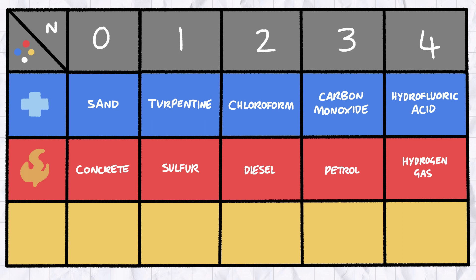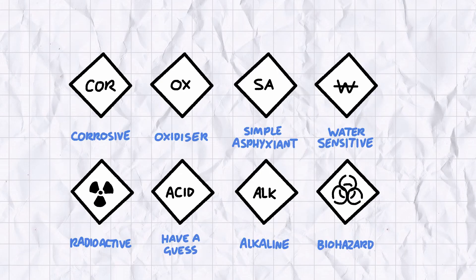There's blue for health risk, red for flammability, and yellow for stability and chemical reactivity. The white square, meanwhile, contains codes and symbols for more specific hazards.